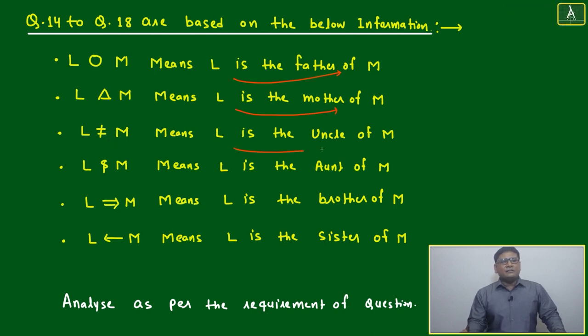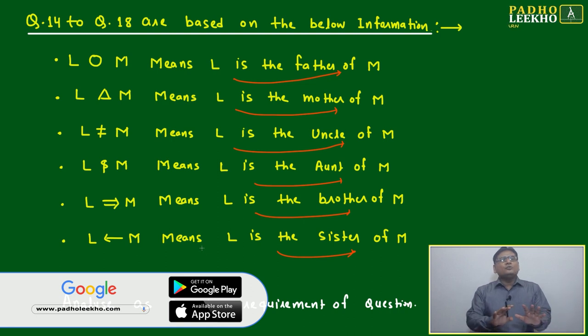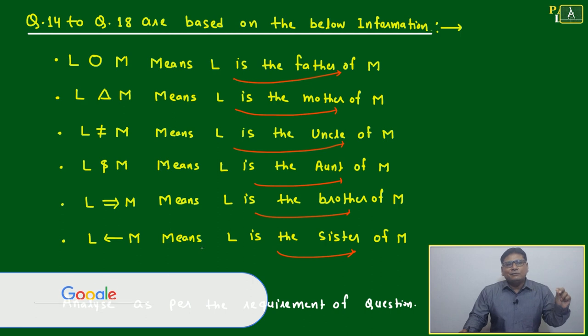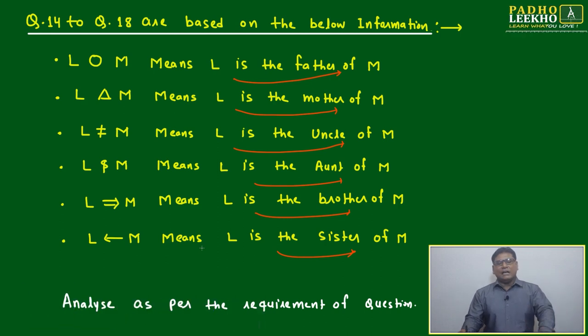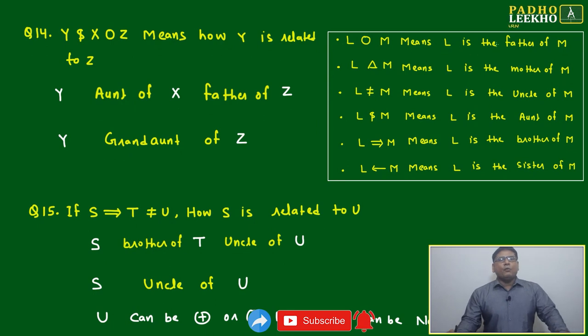L not equal to M means L is the uncle of M. All relations are given between L and M with different meanings. This is brother, this is sister. How do we solve this question? This case, no need to analyze, only whatever is given in the question you analyze as per the question's requirement.